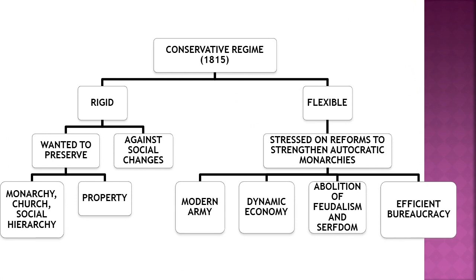The next topic is a new conservative regime after 1815. Being conservative means being traditional in your approach — when you do not want change, you are conservative. So before 1815, that means before Napoleon lost, most monarchies of Europe were very rigid. They were against any social changes; they wanted to preserve monarchy, the authority of the church, and the three estate social hierarchy.